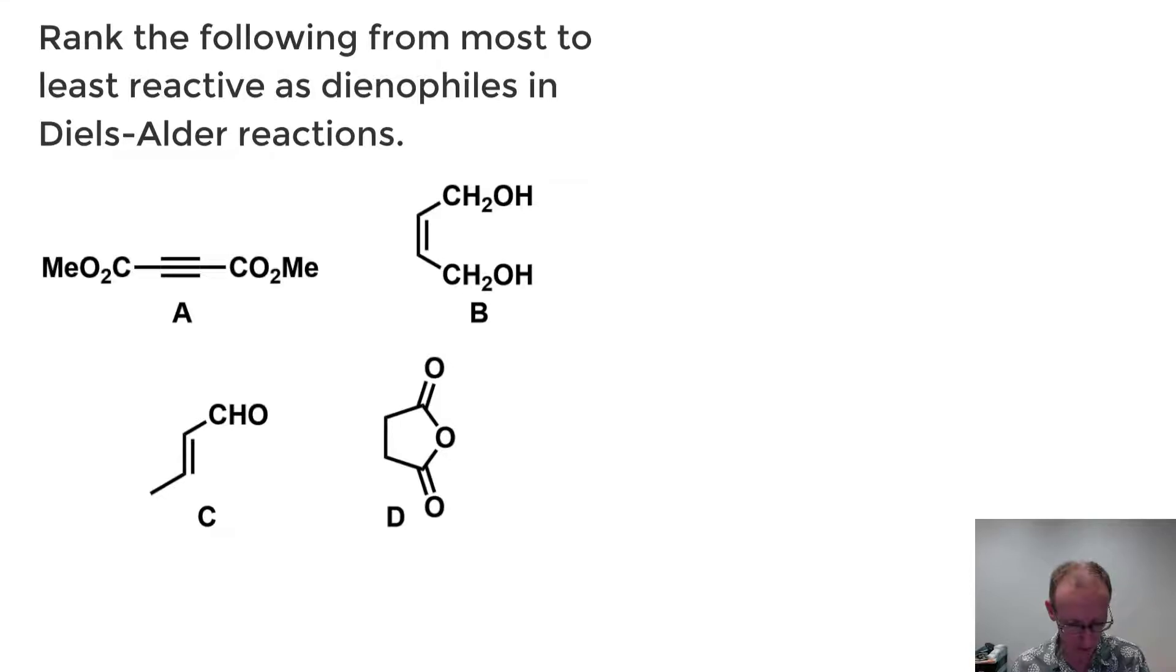Okay, so the second question is about the reactivity of dienophiles in a Diels-Alder reaction. If we look at each one of these, the first thing we should confirm is will the compound actually react as a dienophile? Alkenes and alkynes can react but in general carbonyl groups, particularly of esters, are very stable and so that will not react as a dienophile. It's very much like maleic anhydride but it's missing that double bond so it's not a dienophile. So out of the remaining ones we've got two activating groups on A whereas I've only got one activating group on C. So I would say that A should be more reactive than C.